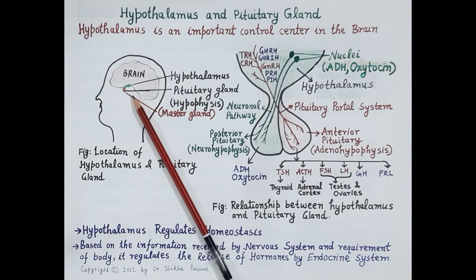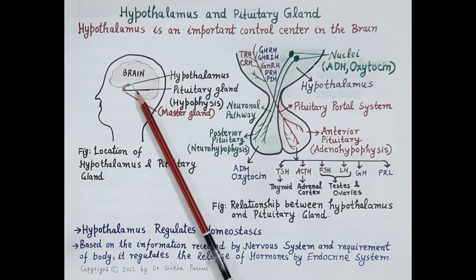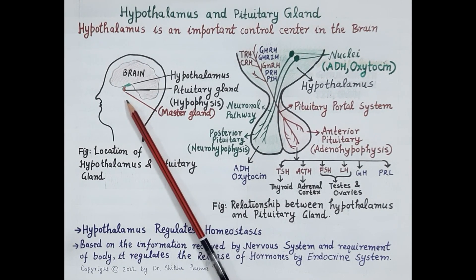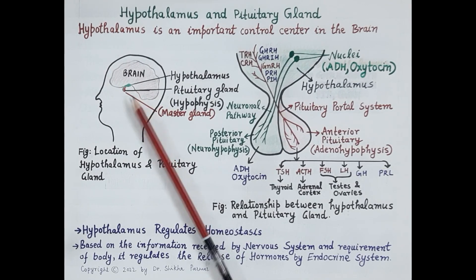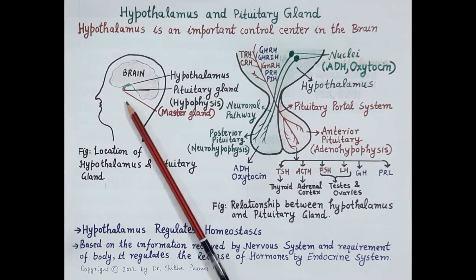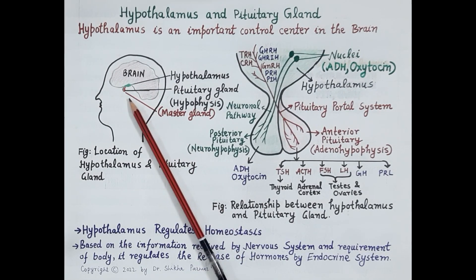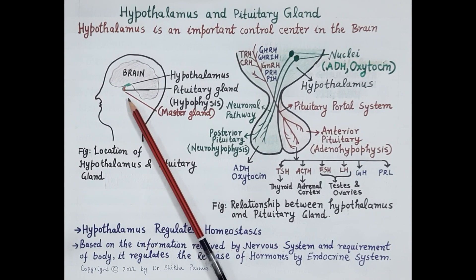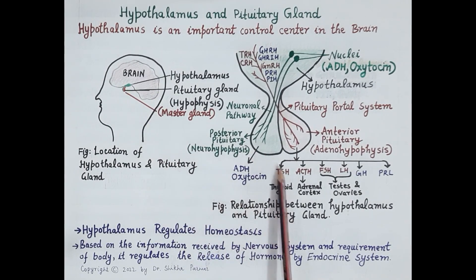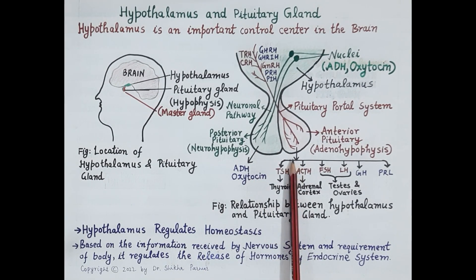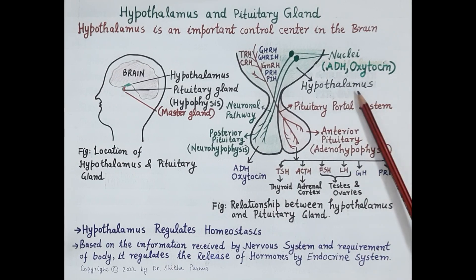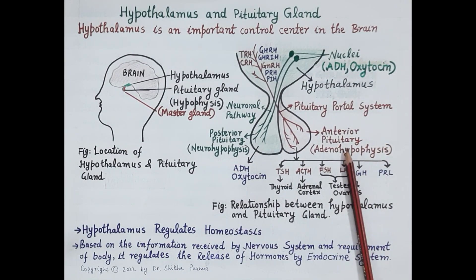Now let's discuss the relationship between hypothalamus and pituitary gland. Hypothalamus and pituitary gland act as a unit. Hypothalamus regulates functioning of pituitary gland. Pituitary gland is also called as the master gland, and it in turn regulates functioning and commands most of the other endocrine glands. Now look at this figure — this is a zoomed diagram showing the anatomical relationship between hypothalamus and the pituitary gland.